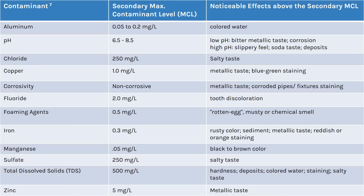This table covers secondary maximum contaminant levels. Secondary contaminant levels as listed by the EPA are not crucial to test for since they do not cause significant health effects. However, it is recommended that you test for these because these contaminants can lead to changes in the aesthetic quality of the water — including taste, appearance, and smell. Examples of contaminants that change color are aluminum, copper, or iron, and contaminants that change taste include chloride or sulfate. All of these can make the water very unpleasant, especially if you are going to be drinking it.